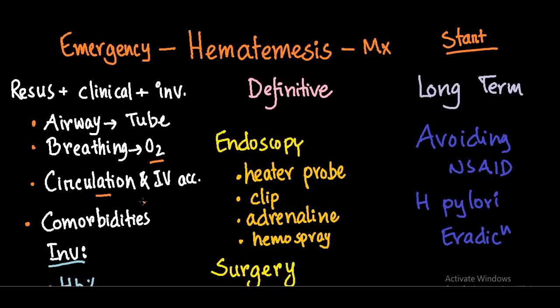After stabilization, go for definitive therapy. If the patient has peptic ulcer disease bleeding, the endoscopic options include a heater probe, a clip, or injection of dilute adrenaline into the bleeding area. If all those fail, you can use hemo spray. That covers non-variceal bleeding.